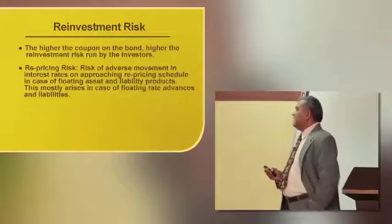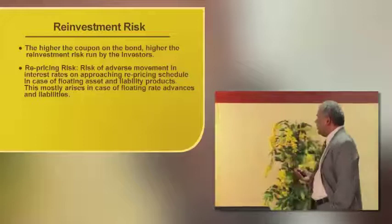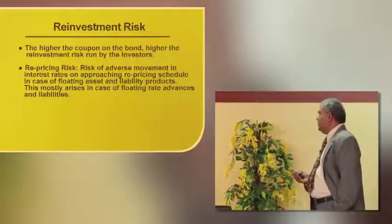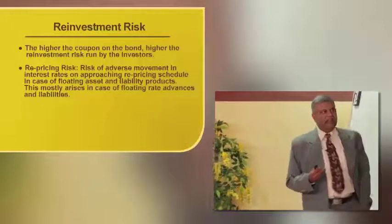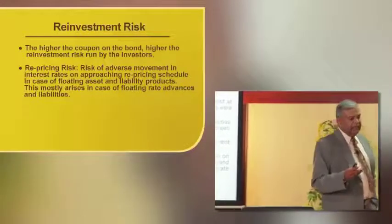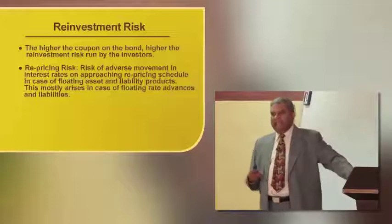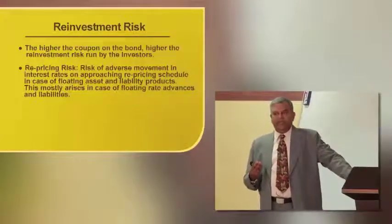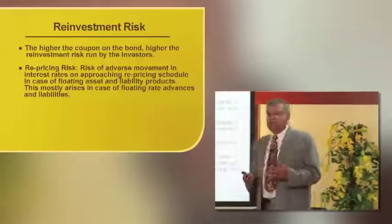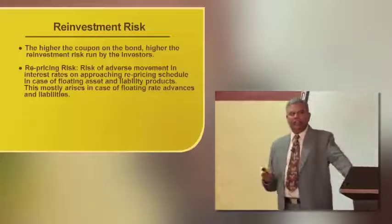Higher the coupon of a bond, higher the reinvestment risk run by investors. Repricing risk is the risk of adverse movement in interest rate on approaching repricing schedule in the case of floating rate asset or liability products. Reinvestment risk is more when assets and liabilities are linked to a benchmark. For example, a bank accepting a five-year deposit linked to the 91-day treasury bill means the deposit comes for repricing four times a year — twenty times over five years. In a rising interest rate scenario, the bank has to pay a higher rate of interest each time.